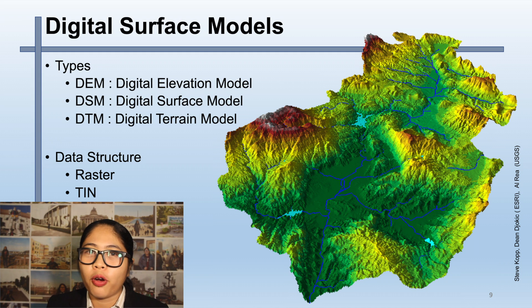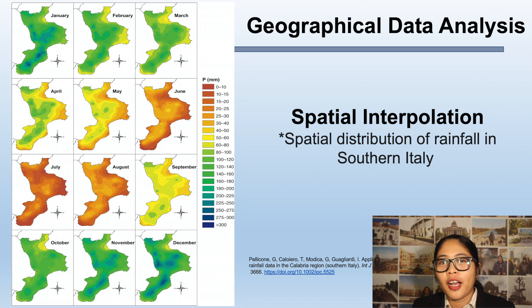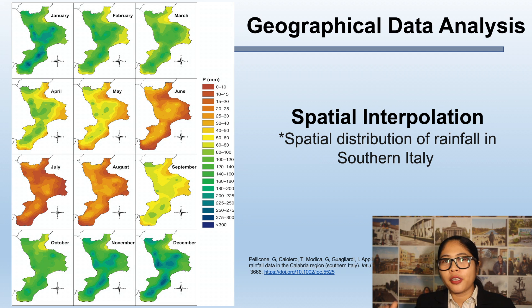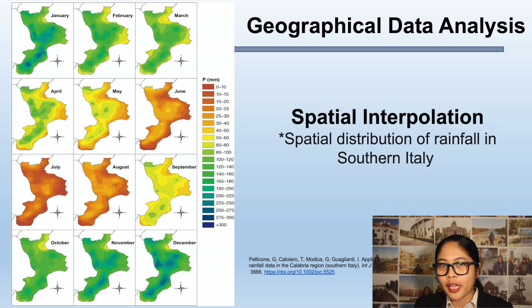In this subject, we will focus more on the DEM, or Digital Elevation Model. The next example is Geographical Data Analysis. This shows the application of spatial interpolation in the monthly rainfall of a certain country — specifically, rainfall data in the southern part of Italy. Spatial interpolation is the process of using points with known values to estimate values at other unknown locations. For example, to make a rainfall map of a country, we need enough evenly spread weather stations to cover entire regions, and we can interpolate rainfall values for areas without data.